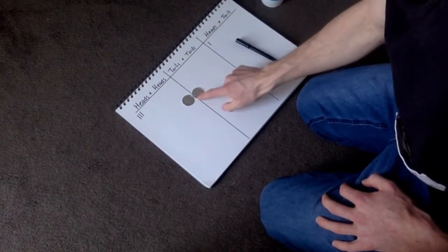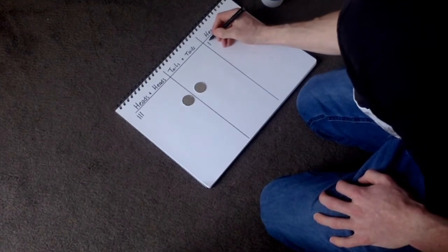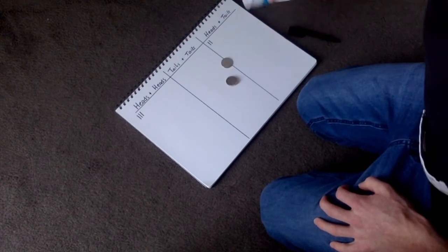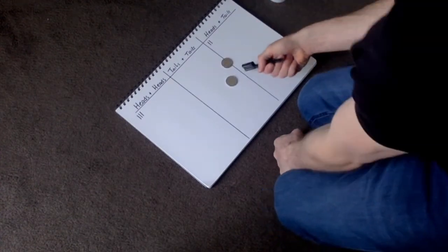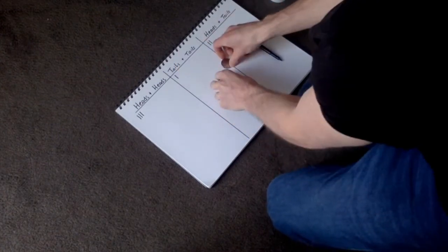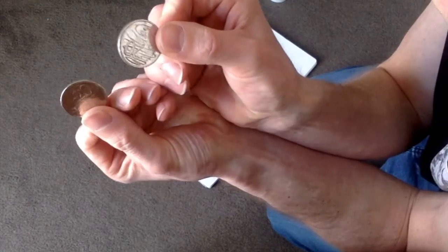Again. Oh, I've got another heads and tails. Okay. So again. Oh, I've got two tails this time. So I need to put one in there. So two tails look like that.